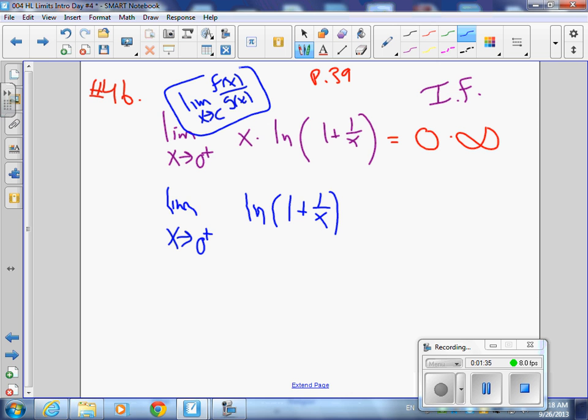So how do we turn this into f of x over g of x? I've got this in the top. What should I put on the bottom? That's right, 1 over x. It's still the same thing, but now I have an f of x over g of x form.